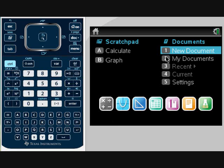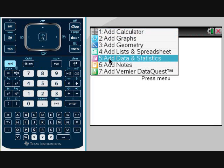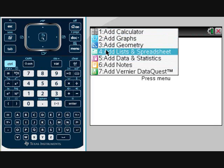We're going to start from our main page and open a new document. Once you open a new document, you're going to have a list of options of what kind of page you want to add. So we're going to select number 4, add list and spreadsheet.